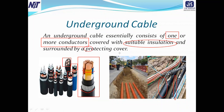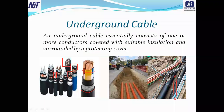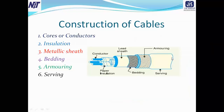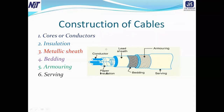So we have discussed the protecting cover, and it is now clear what an underground cable is. Moving on to construction — the construction of a cable is divided into six main different sections. The first one is the core or conductor.